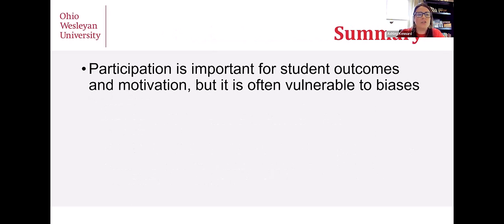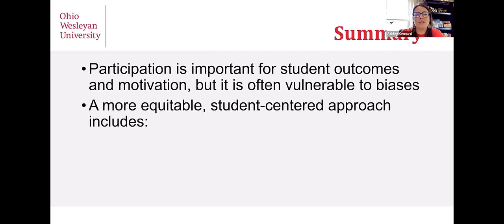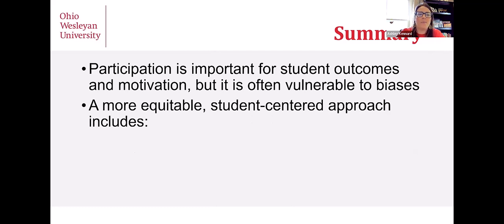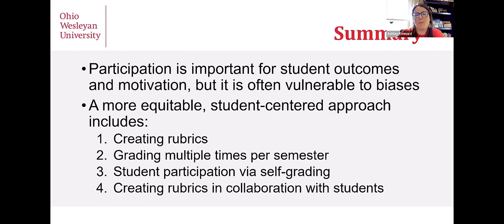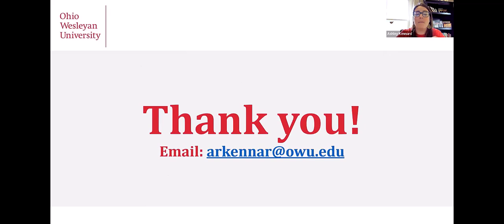Just to recap: participation is important for student outcomes — that's well-established. We tend to include a participation element in our grades to motivate students, but it's very vulnerable to biases. The four steps I've been working on to make more equitable and student-centered participation evaluations are: create rubrics, grade multiple times throughout the semester, have students participate in self-grading, and create those rubrics in collaboration with the students so that they have a voice in what is being assessed. Thank you so much for your time. Here's my email address — I can put that in the chat — and I'm curious if anyone has any questions, comments, or concerns.